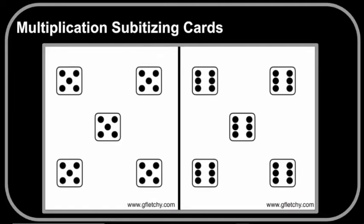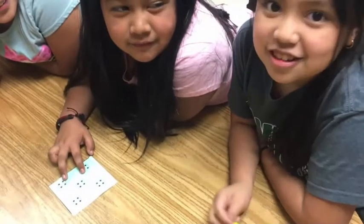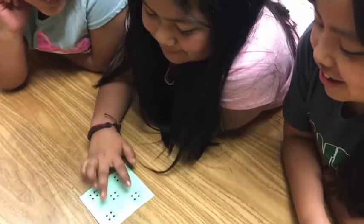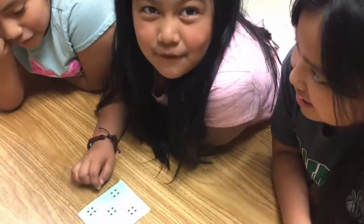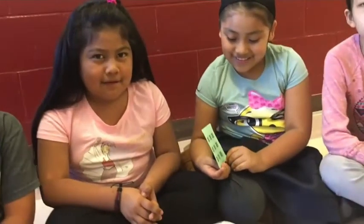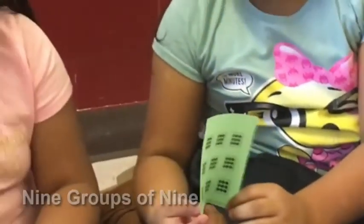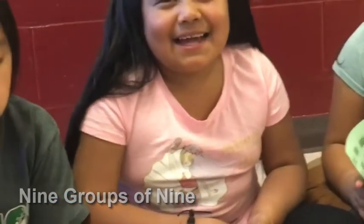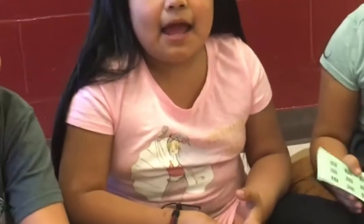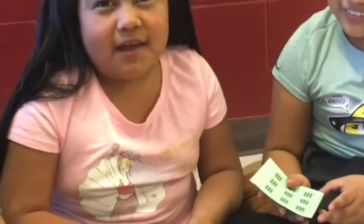In the next activity, multiplication subitizing cards are used to help students see connections and patterns. Instead of just focusing on isolated facts for students to memorize, the cards foster multiplicative thinking. How many dots are there? 20. How do you know? Because 8 plus 8 equals 16 plus 4 equals 20. What do you have on your card? 9 groups of 9. So how many dots is that? 81. And how do you know? Because 9 times 10 equals 90 minus 1 group of 9 is 81.